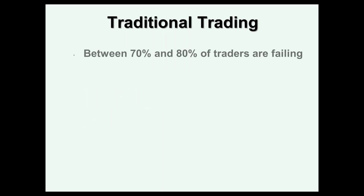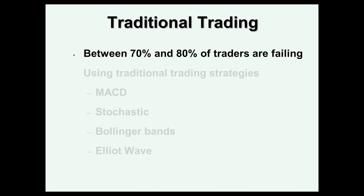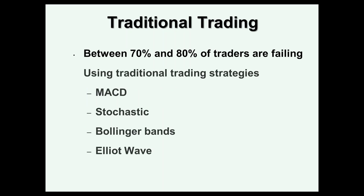Traditional trading: you've got to realize that 70 to 80% of traders are failing, and they are using traditional strategies — the MACD, which happens to be the most favored indicator in the world by traders, followed by stochastics, Bollinger Bands, Elliott Waves, moving averages, et cetera. These strategies don't work because if they did work, there wouldn't be such a large fallout.